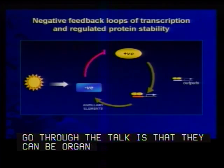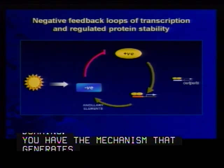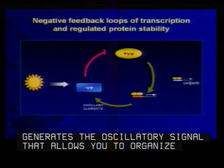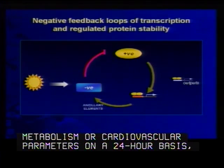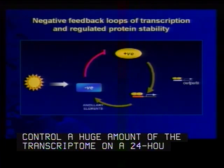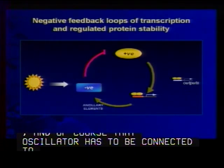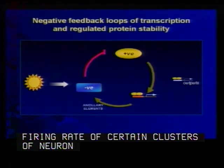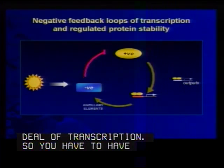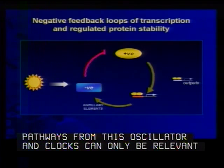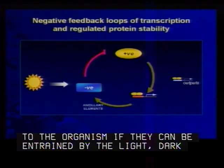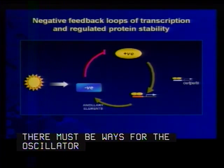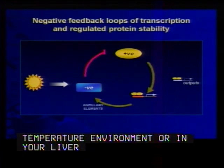Circadian networks can be organized into three basic domains. You have the mechanism that generates the oscillatory signal, which allows you to organize metabolism or cardiovascular parameters on a 24-hour basis and control a huge amount of the transcriptome. That oscillator has to be connected to outputs — for example, the clock in the brain can regulate on a 24-hour basis the firing rate of certain clusters of neurons. Clocks can only be relevant to the organism if they can be entrained by light, dark, or temperature cycles, so there must be input pathways, including in your liver where glucocorticoids and food-based signals can phase shift the clock.